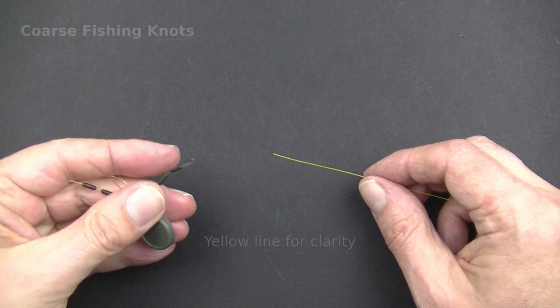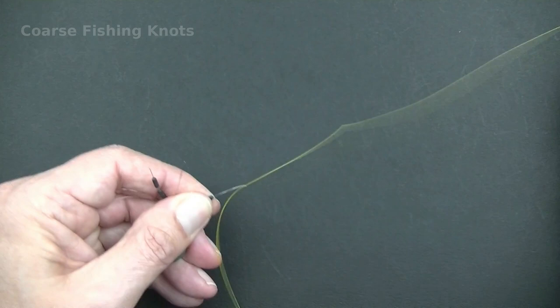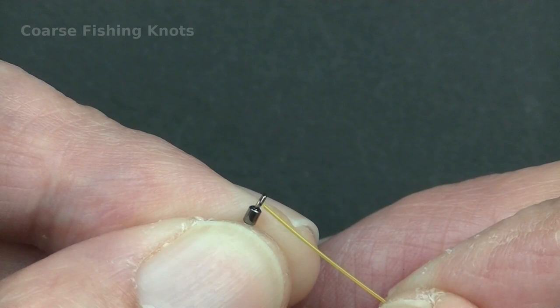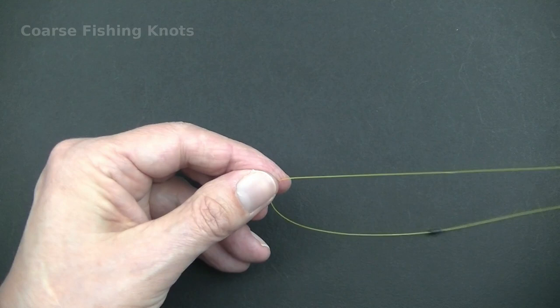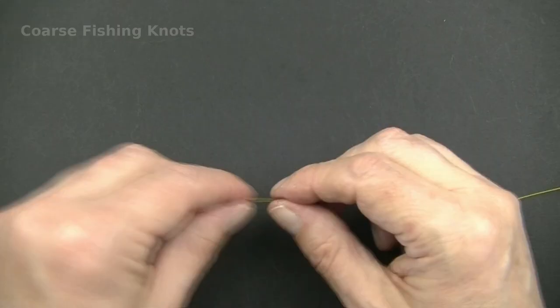Begin tying the rig by threading the first of two line stops onto the main line. Follow it with a small or medium sized quick change hook link swivel and the second line stop. Slide the whole assembly up the line out of the way.